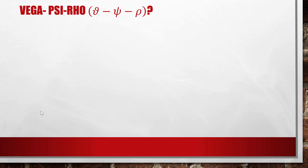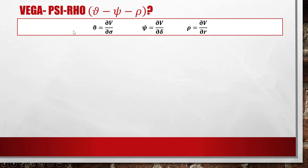Now let's consider the last three Greek letters: Vega, Psi, and Rho. Note that in some textbooks Vega is called nu, but for short we call it Vega. For Vega, Psi, and Rho, we differentiate V with respect to the other three factors: sigma (volatility of the stock), delta (dividend yield rate), and r (risk-free interest rate). Vega is the partial differential of V with respect to sigma and measures the change in V when there is a small change in sigma.